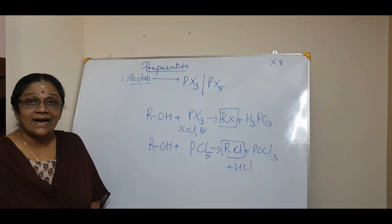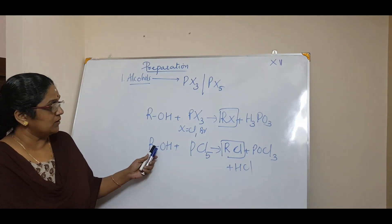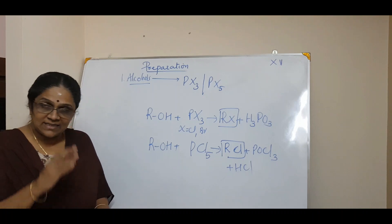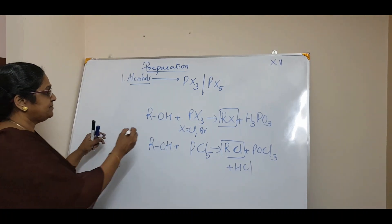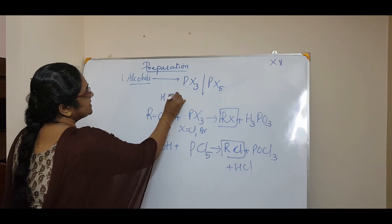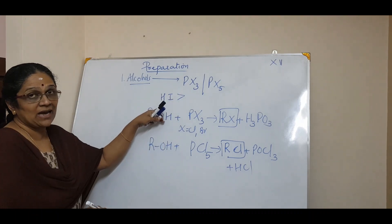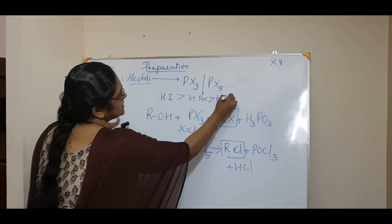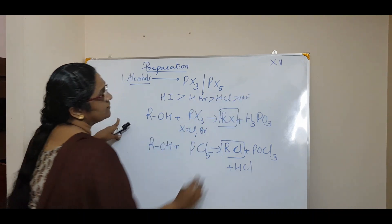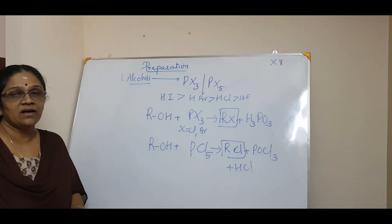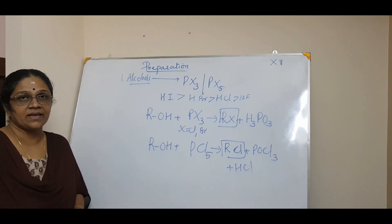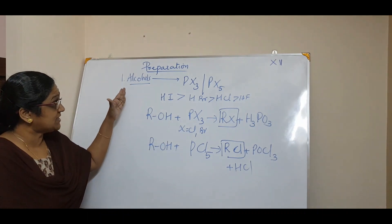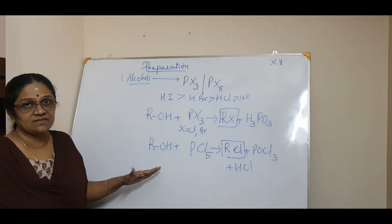Regarding reactivity of halo acids: HI > HBr > HCl > HF, due to the increasing size of the halogen ion. So there are three divisions for the first preparation from alcohols.